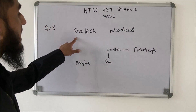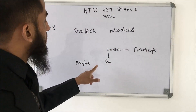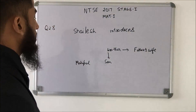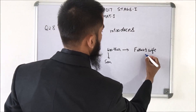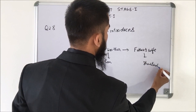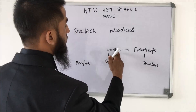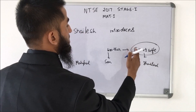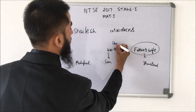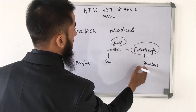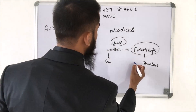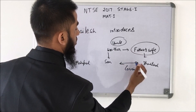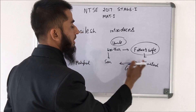This question says Shelesh introduces Mahipaar as the son of the only brother of his father's wife. His father's wife is his mother, and the brother of his mother is his uncle. Mahipaar is the son of Shelesh's uncle, so the two are cousins.